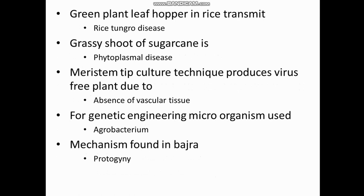Green leaf hopper in rice transmits rice tungro disease. Grassy shoot of sugarcane is a phytoplasmal disease.